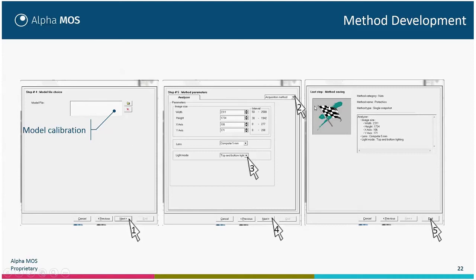Then click Next and set the image size. You can retrieve the acquisition method parameters set manually, including the lens and the light mode. If you want repeatable analysis of one product, you must always use the same lens and the same lighting mode. If the system is set with a different lens or lighting mode, it will not allow use of that method. This is important because if you create a model with one illumination type, you cannot use another illumination type to determine product quality. Then click End on the last step of the wizard.